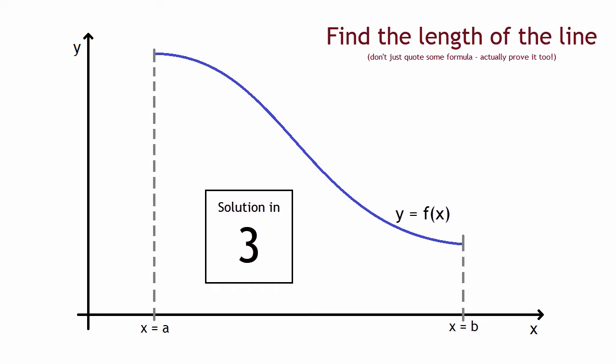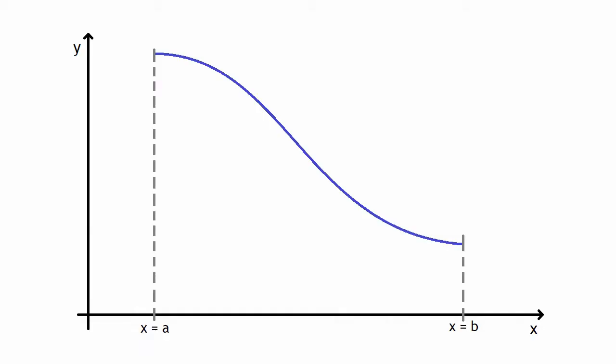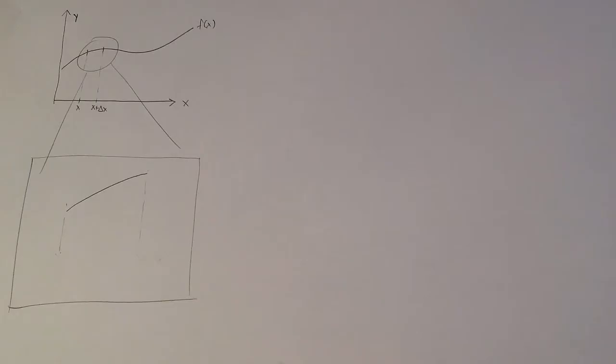Let's take a look at the answer. Let's say we have a line y equals some function of x. What I can do is I could divide up the lines into smaller sections where each section moves in the x direction by the length delta x.